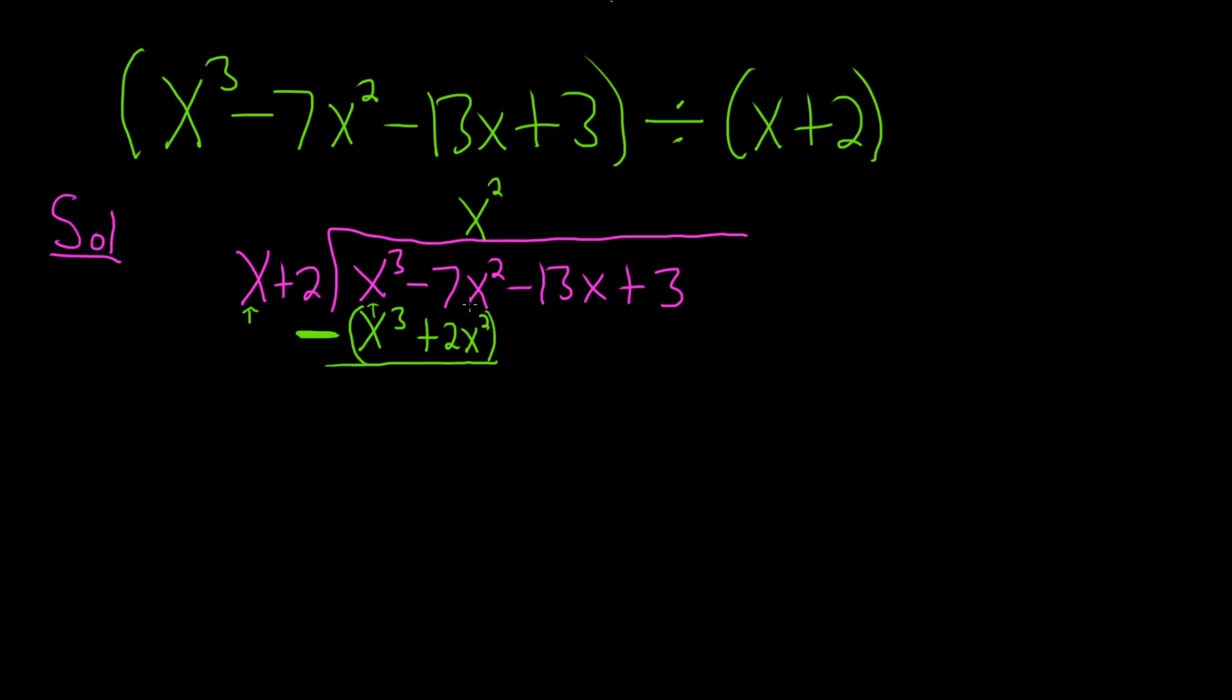negative 7x squared, and then when we distribute this, it'll be a negative 2. So negative 7x squared and a negative 2x squared is negative 9x squared. Then you bring down the next one, so minus 13x.